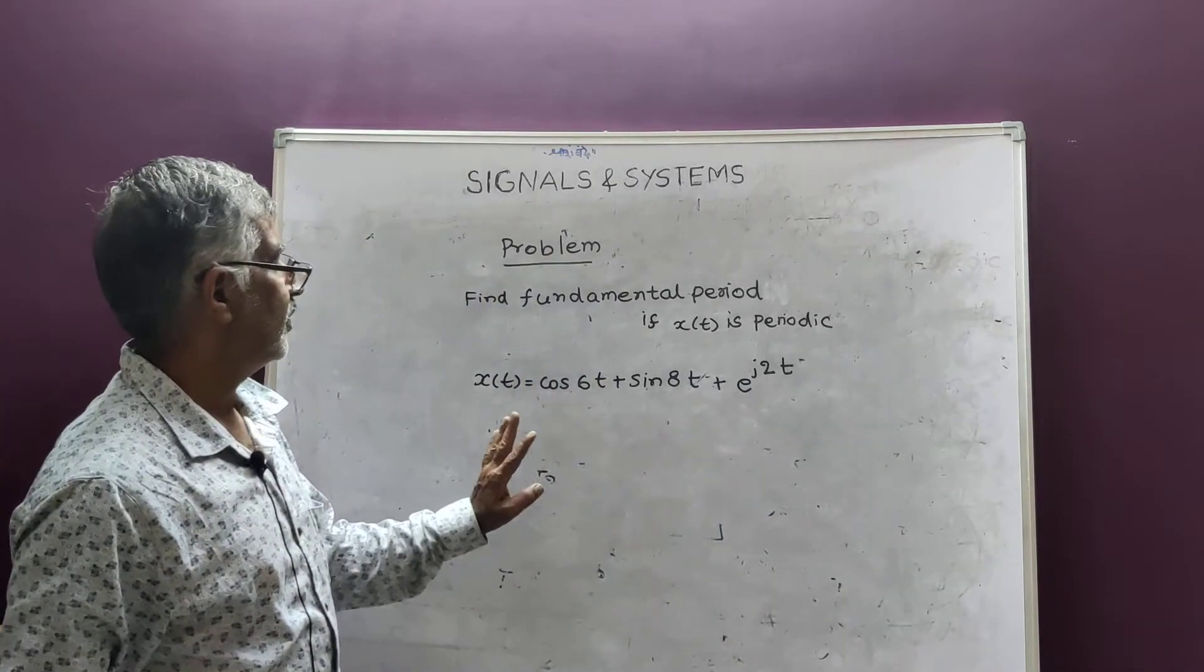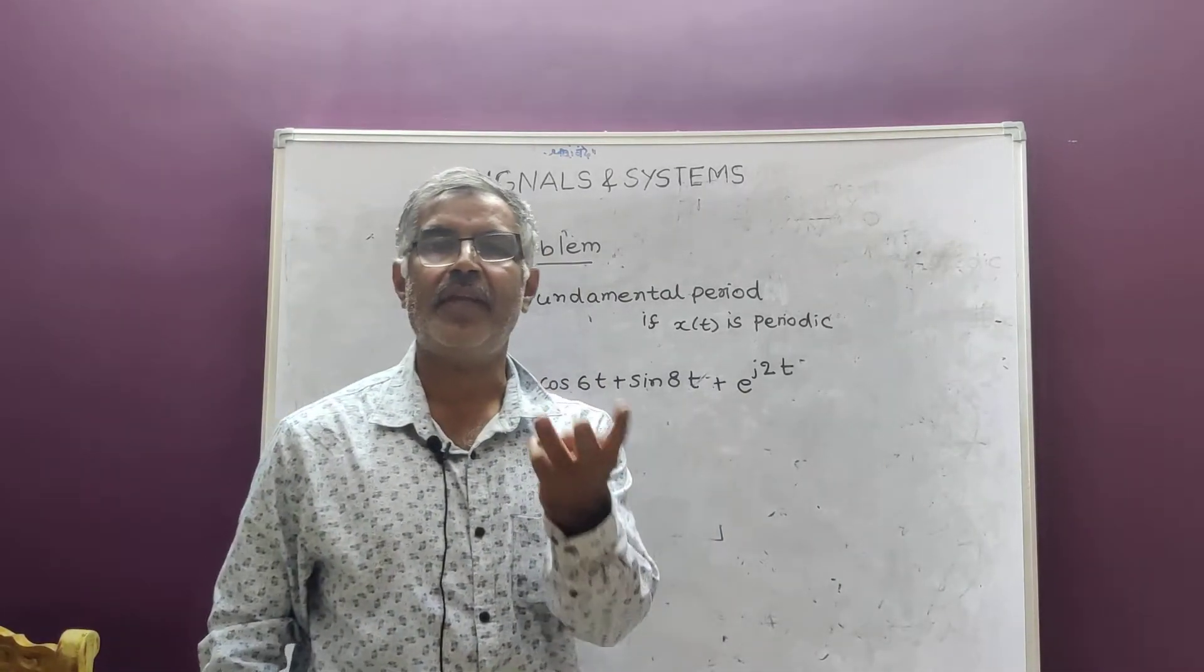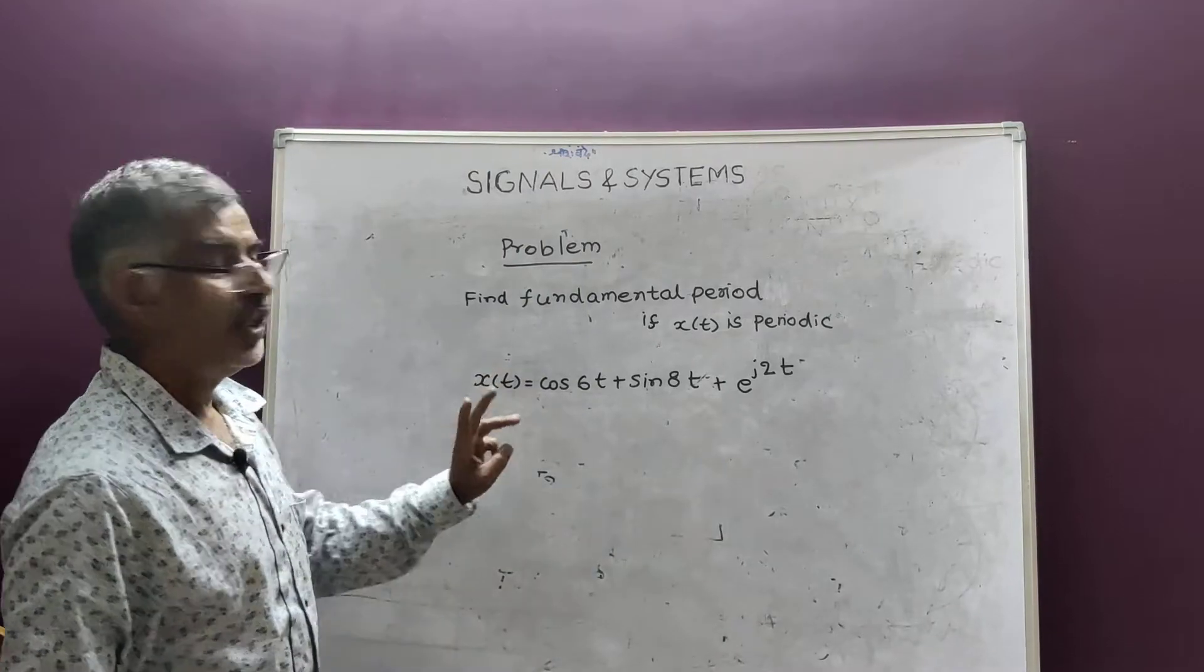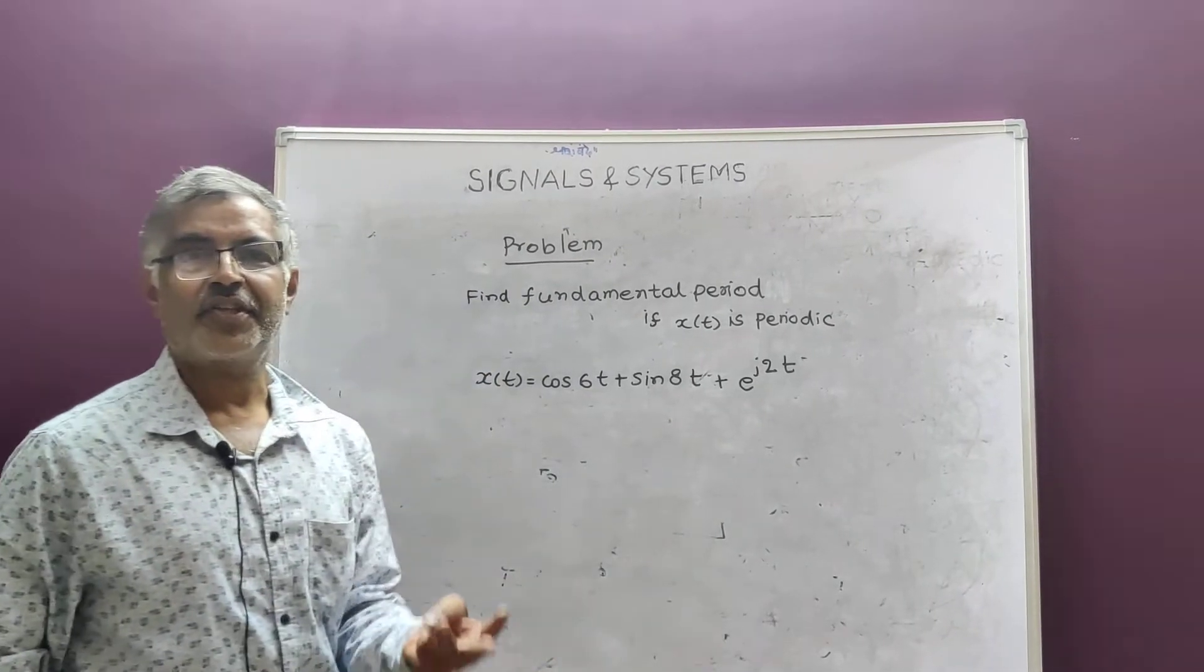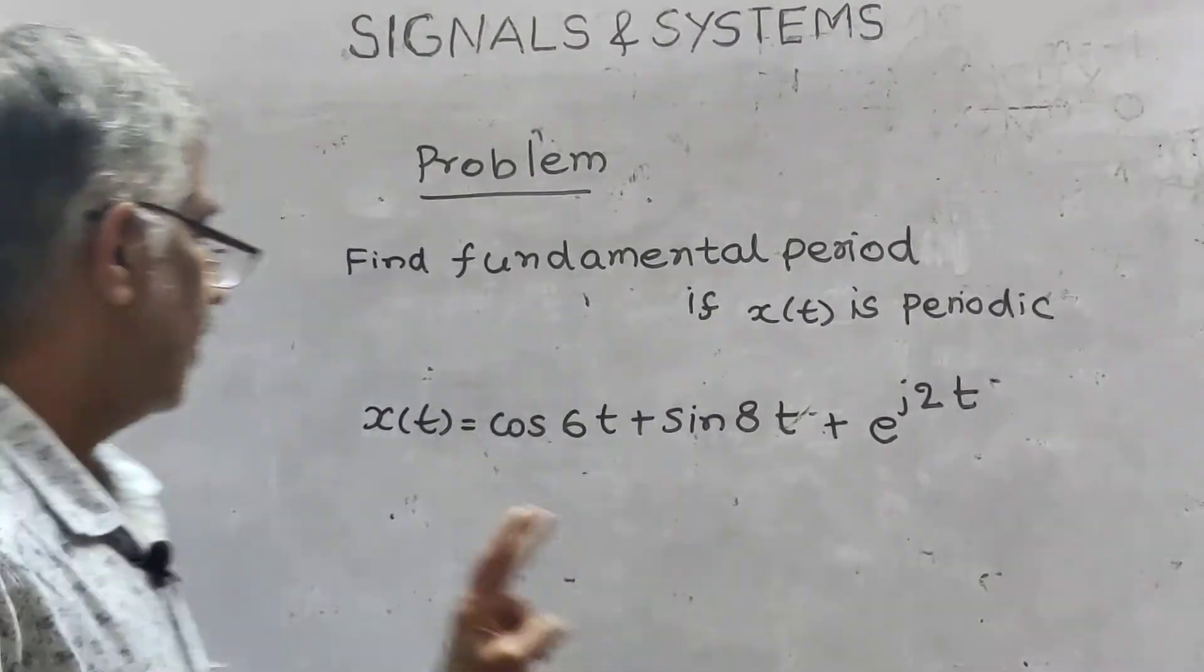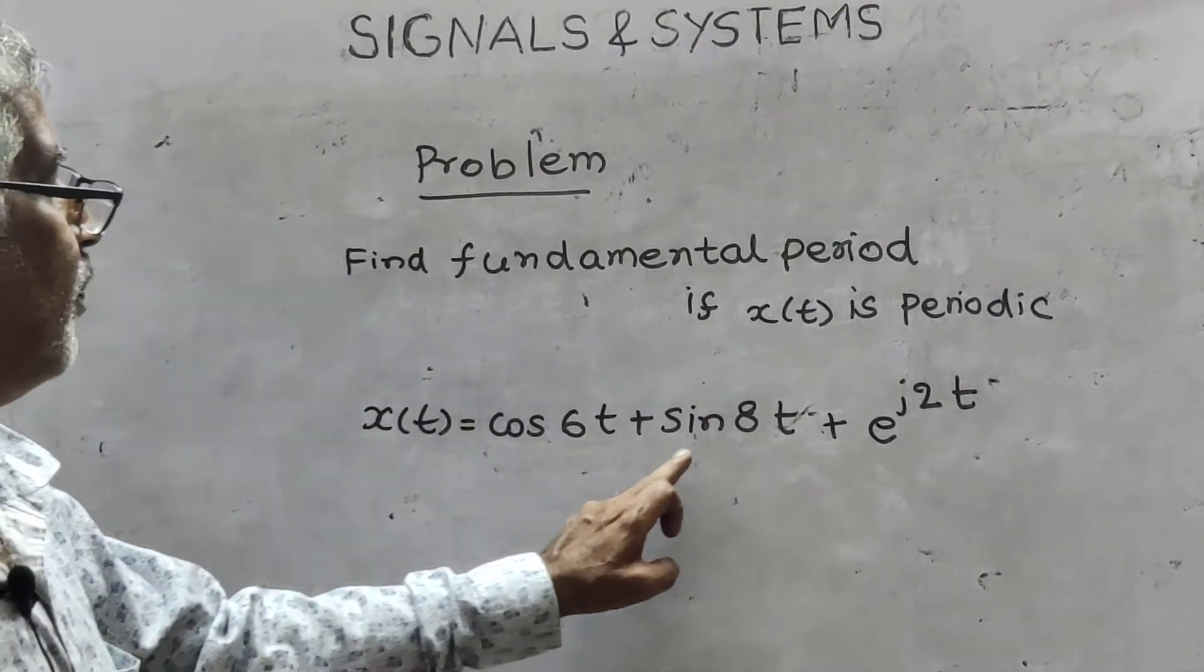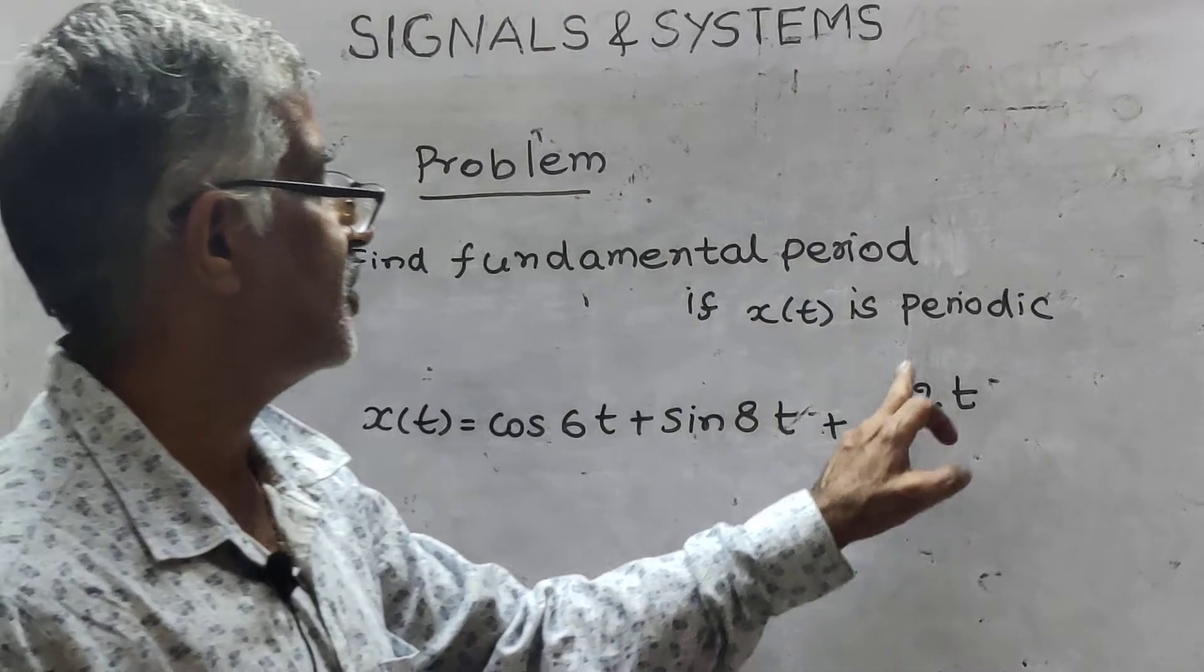The difference here is instead of two terms, now I am taking three terms. In the previous class, I took two terms for x(t). Now I will extend it to three. x(t) equal to cos 6t plus sin 8t plus e power j 2t.